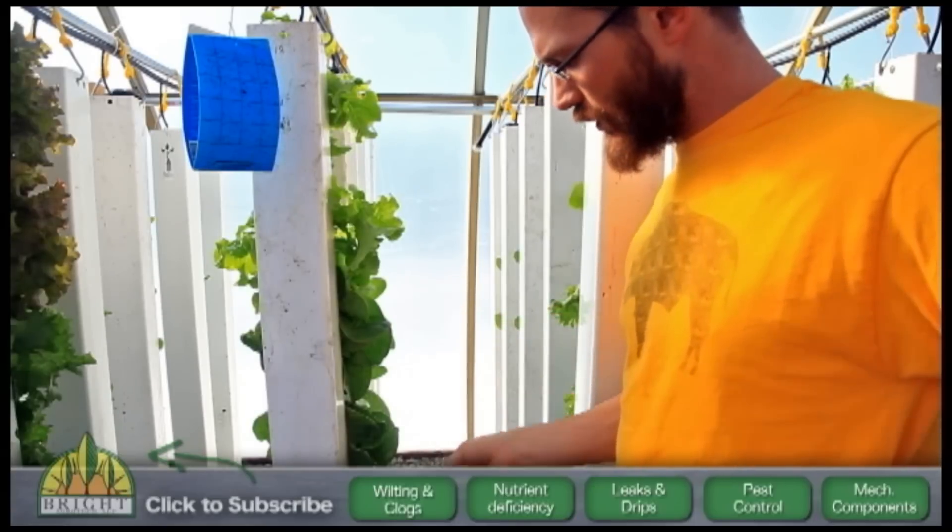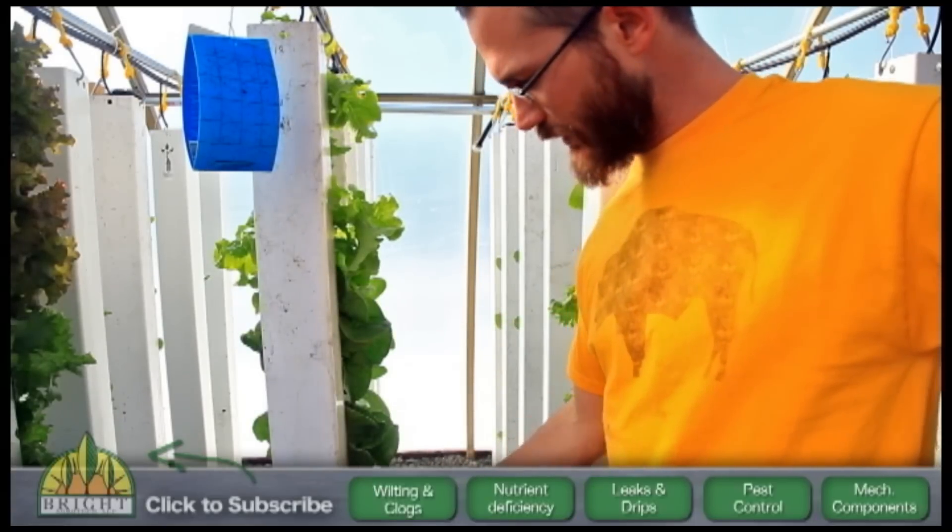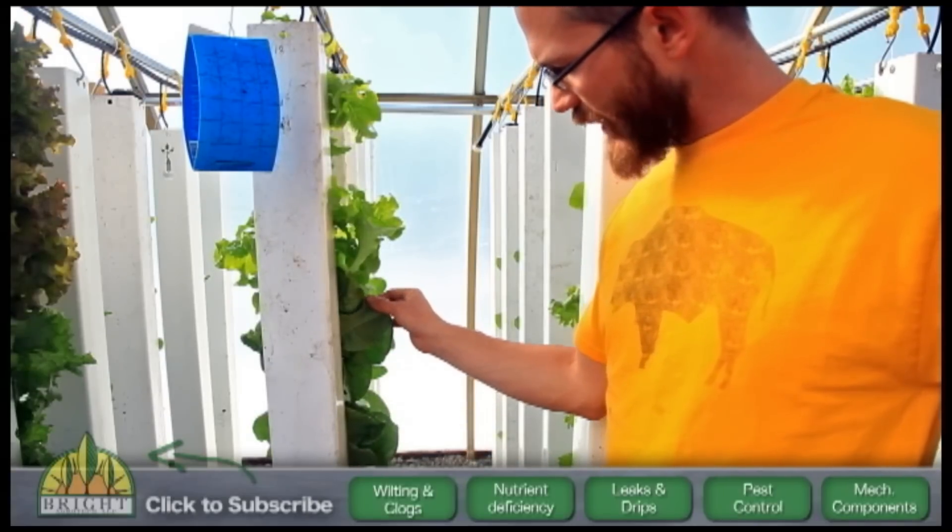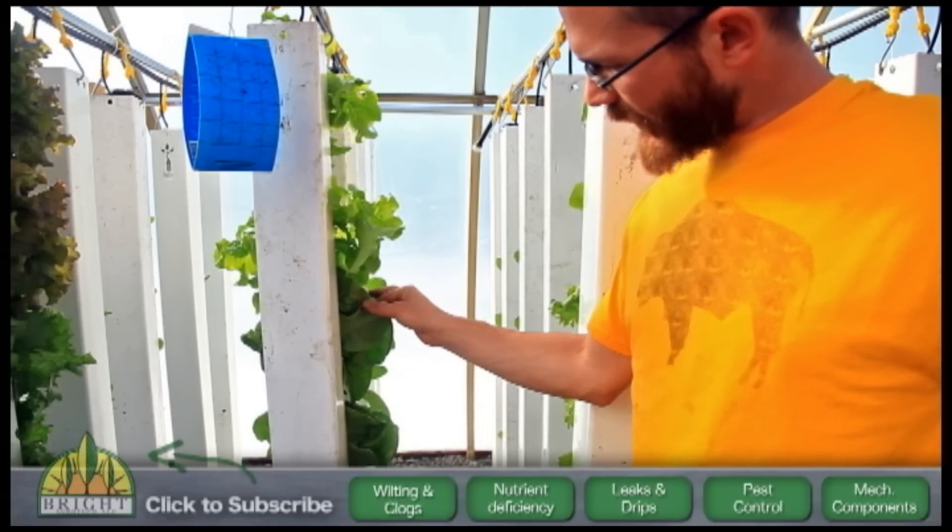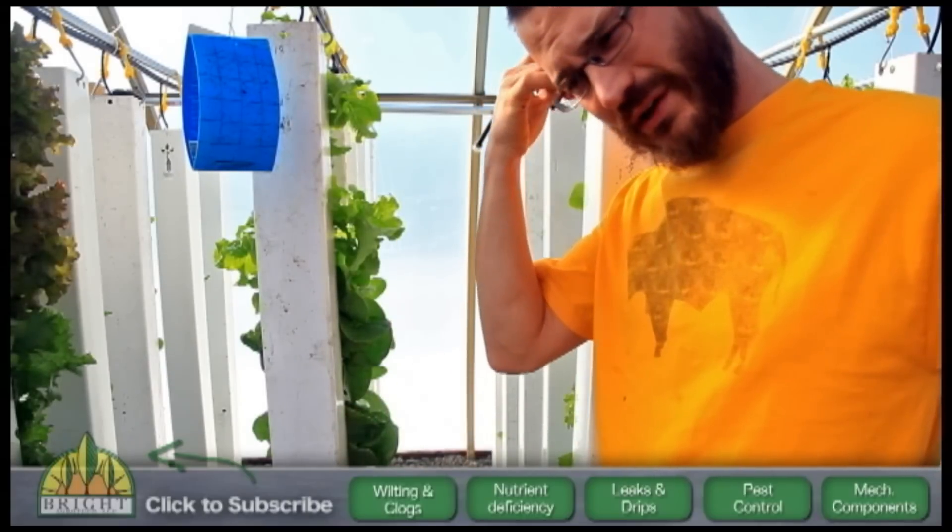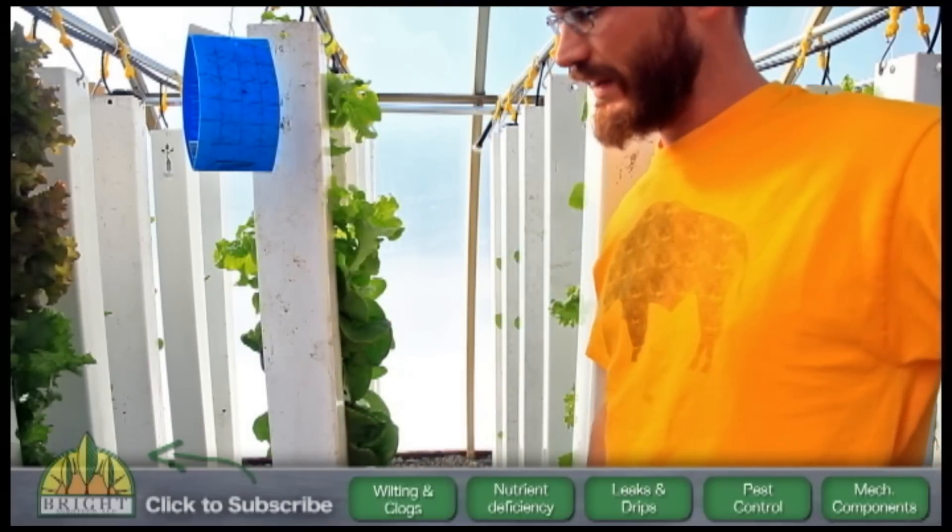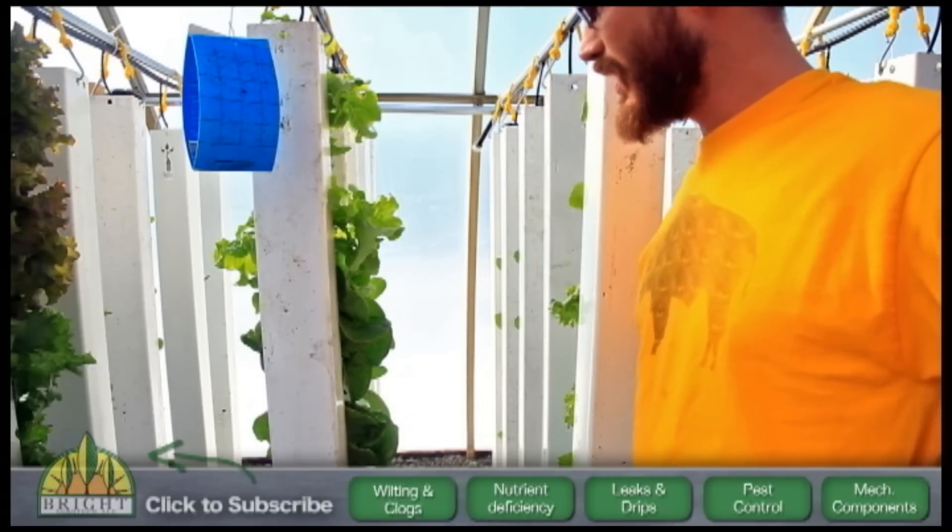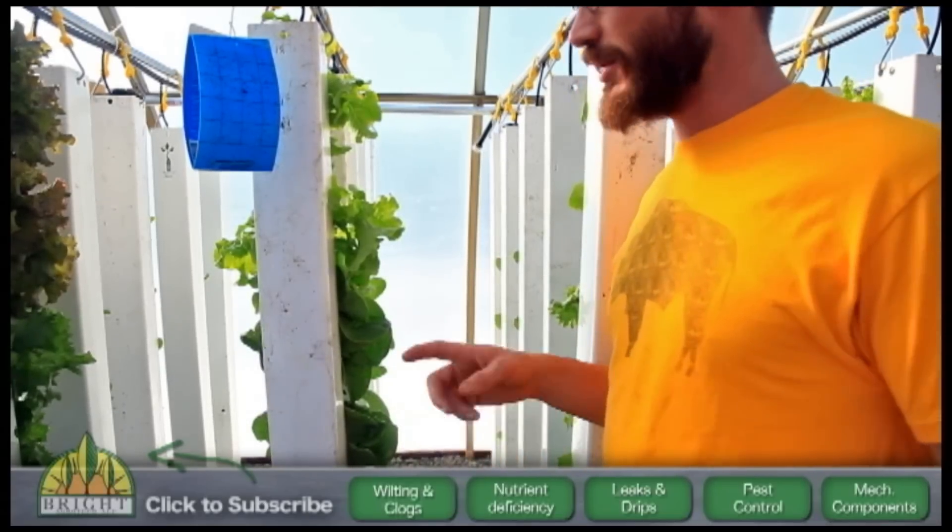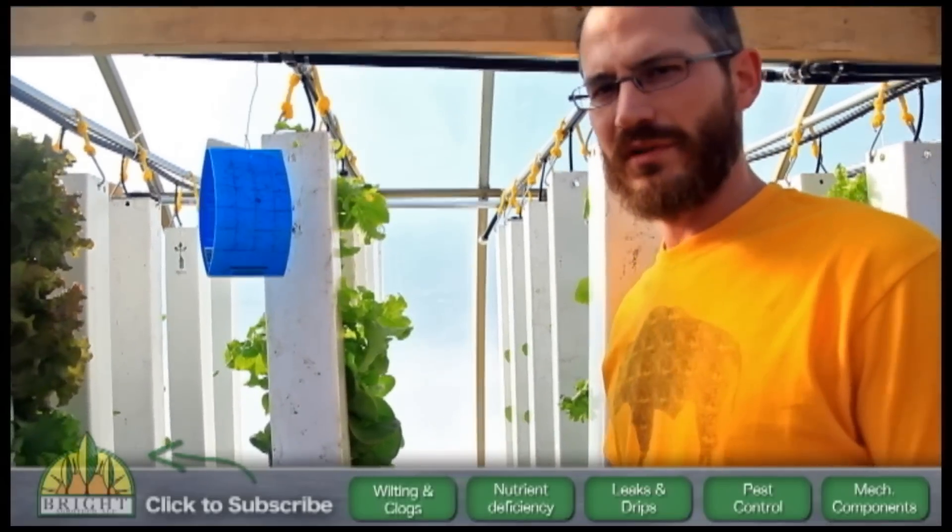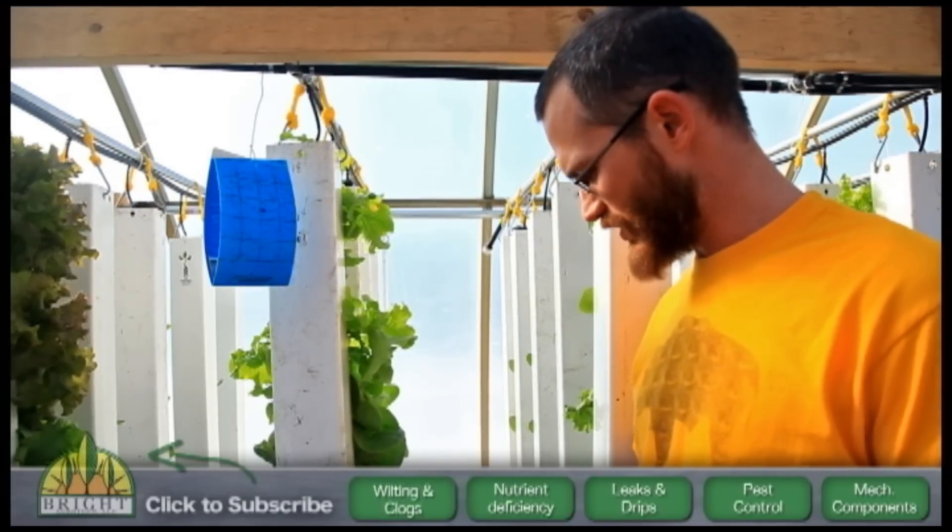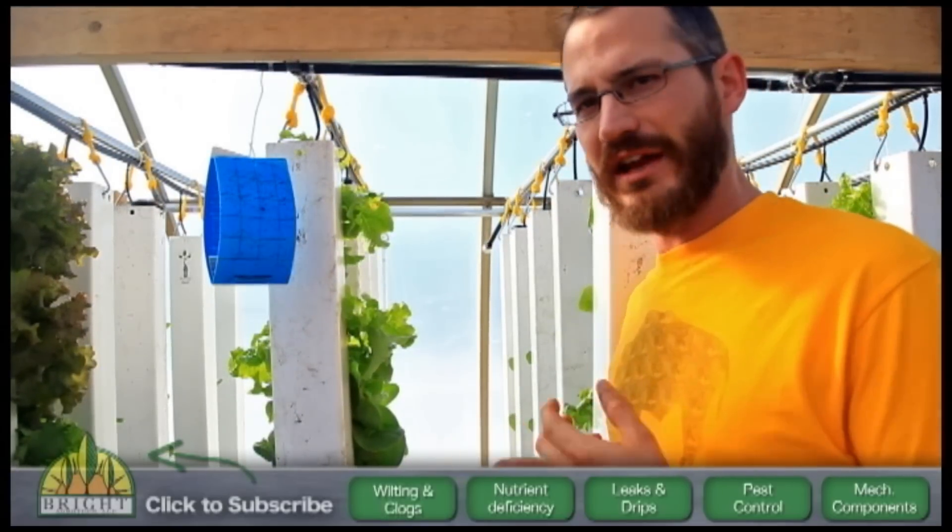So occasionally we'll go through and we'll find towers that show particularly bad infestations. But we'll go through and we'll find a tower like this and we'll spray. And we'll count how many there are beforehand and we'll count how many there are afterwards. And we'll try to gauge our efficacy from that. But we do have a set spraying schedule where we go through with a bunch of different OMRI products that we use in here to kill the pests. And we just go through and we check on them and make sure they're not getting too far out of control.